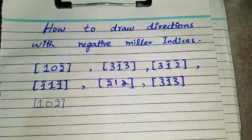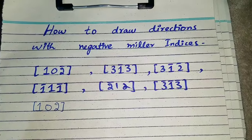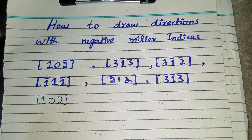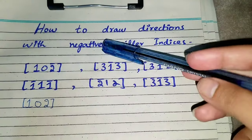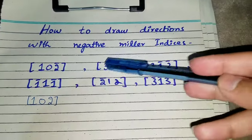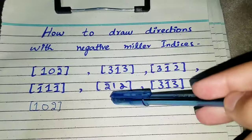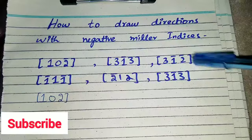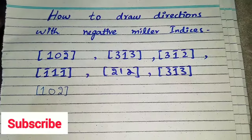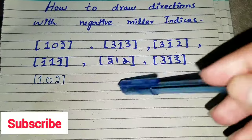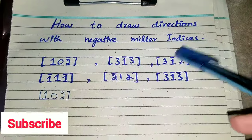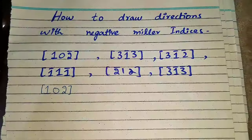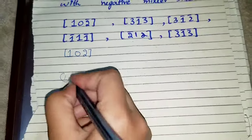Hello everyone, I hope you're doing well. In this video we'll see how to draw directions from given Miller indices. The main focus will be on indices which have negative numbers in them — for example, where one index is negative. We'll cover cases where the x, y, or z index is negative, where two indices are negative, and where all indices are negative. Before diving into negative Miller indices cases, we'll also do the case when all indices are positive so the video is complete.